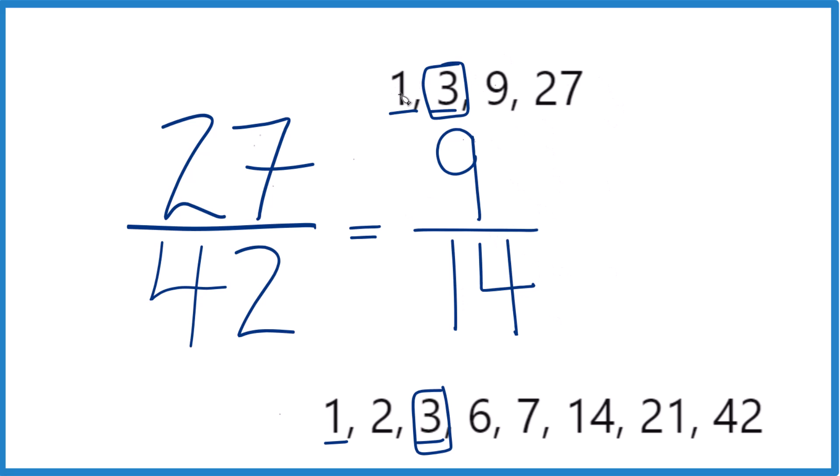For these factors here: 1 times 27 gives you 27. 3 times 9 gives you 27. Down here, 1 times 42 gives you 42. 2 times 21. 3 times 14 and 6 times 7. So those are where those factors came from.